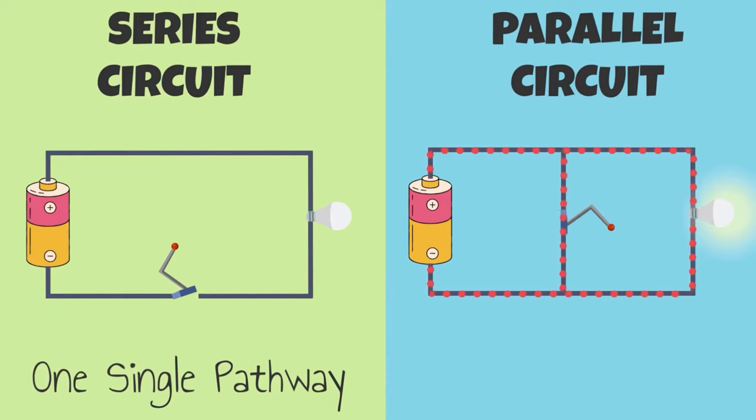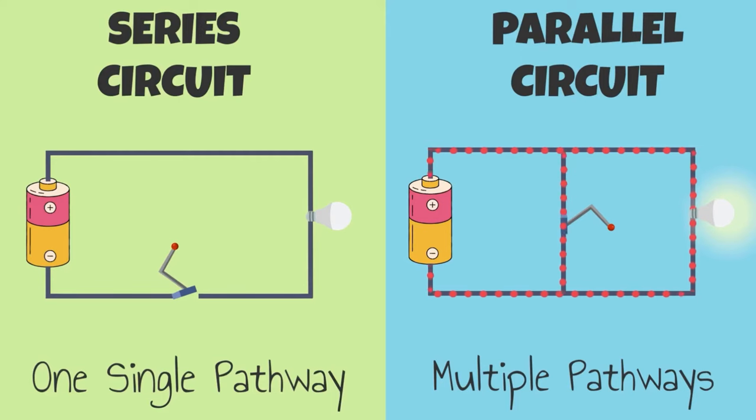In a parallel circuit, we have multiple pathways for electrical energy to flow through. If one of the pathways is interrupted, such as through the opening of a switch, electrons may still continue to flow through another pathway.